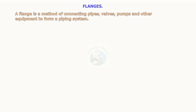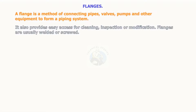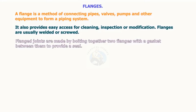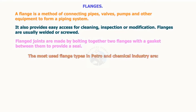A flange is a method of connecting pipes, valves, pumps, and other equipment to form a piping system. It also provides easy access for cleaning, inspection, or modification. Flanges are usually welded or screwed. Flange joints are made by bolting together two flanges with a gasket between them to provide a seal. The most used flange types in the petro and chemical industry are in the following list.